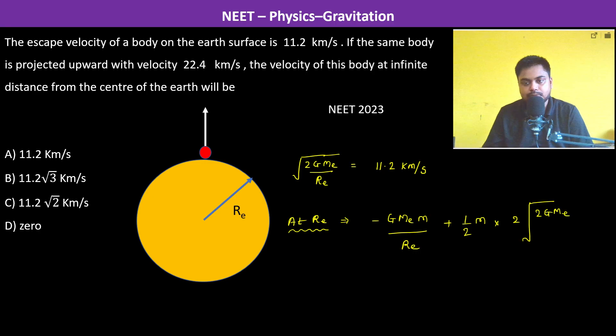½m × 4 × 2GMₑ/Rₑ. So this is 4, so this is equal to -GMₑm/Rₑ + 4GMₑm/Rₑ = 3GMₑm/Rₑ.